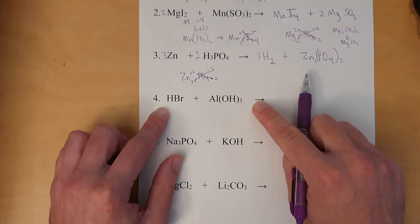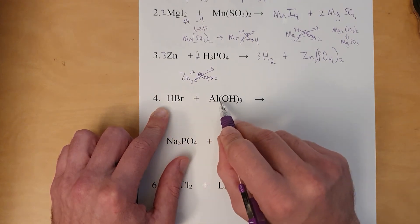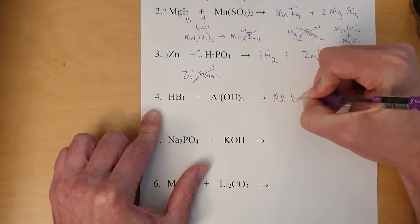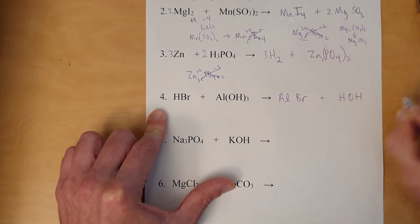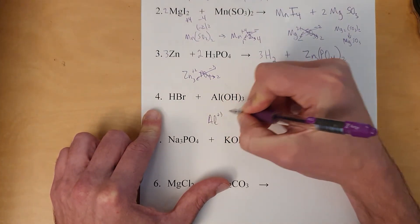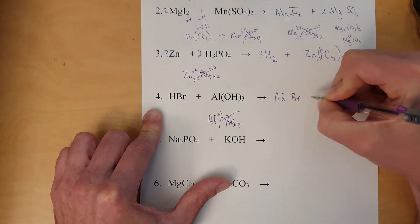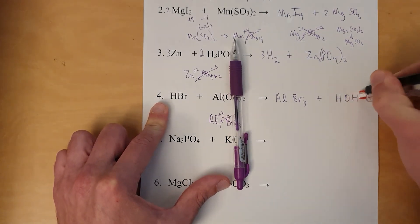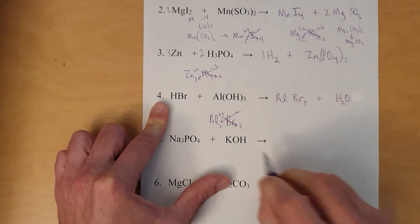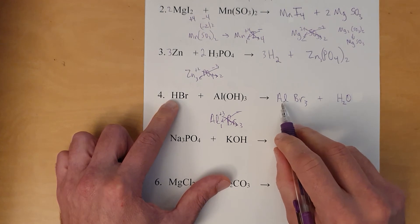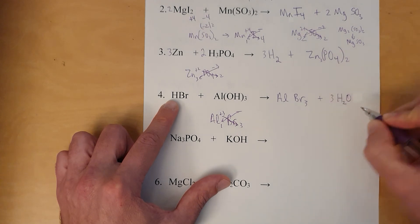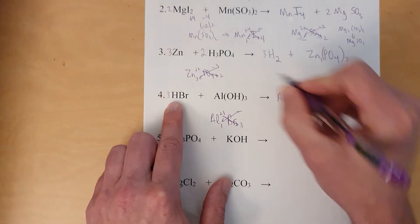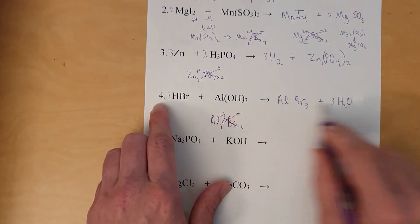Next double displacement reaction: HBr and Al(OH)₃. H is positive, Al is positive — they'll switch places with each other. So aluminum pairs with bromine and hydrogen pairs with OH. Aluminum is +3 and bromine is −1, giving three bromines and one aluminum — AlBr₃. For HOH, note that this is H₂O — just water. One aluminum equals one aluminum; three oxygens, so put a 3 for water. Three bromines — put a 3 here. Six hydrogens on each side. Balanced.